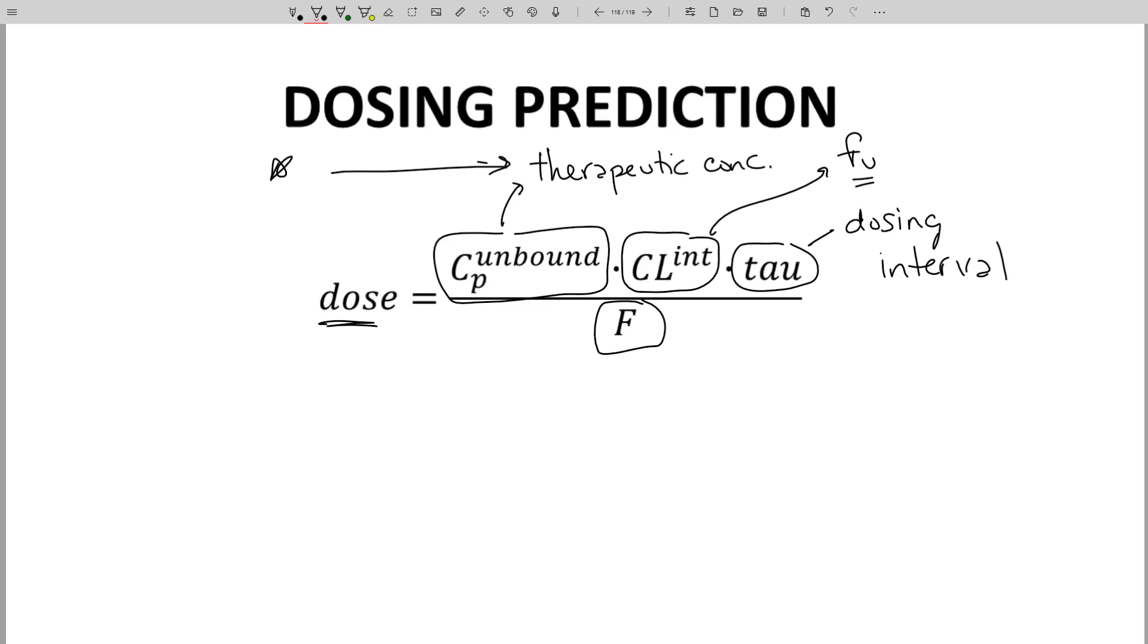For an enzyme inhibitor, we might use an IC50 value. A very important concept is that we can start making dose predictions based on data from various in vitro assays.